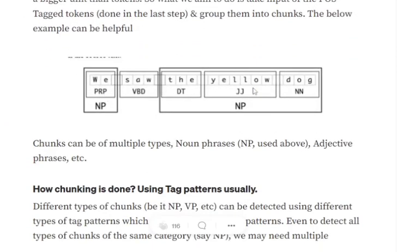So if you see this example, we saw the yellow dog. We are having POS tags with them: preposition, verb, determiner, etc. Now here you can see by chunking we would be adding these three words together - the yellow dog - because it is representing a single entity. And this will be called as a noun phrase.